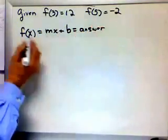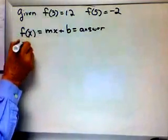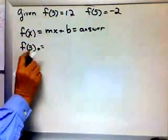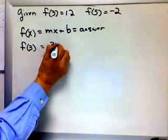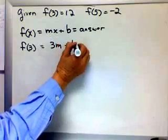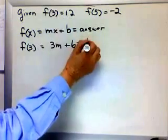Now watch what happens here. So if f of 3, I follow the pattern equals 3 is the x. So that would make this 3m, it's 3 times m, I'll write the 3 first, plus b and it equals the answer 12.